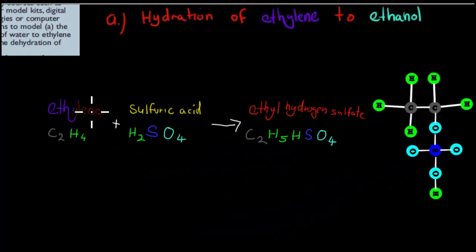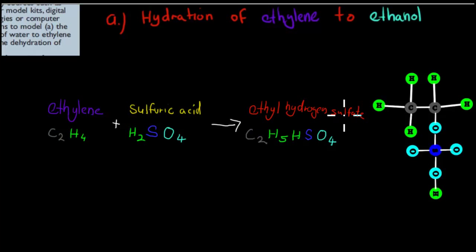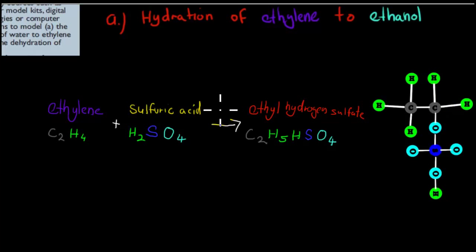So what you saw in the animation was ethylene — the original molecule C₂H₄ — combining with sulfuric acid H₂SO₄. When they combined they made ethyl hydrogen sulfate, which has the chemical structure C₂H₅HSO₄ — just all of those atoms together. It was also important to remember that the reaction didn't actually happen until the temperature was increased, to about 300 degrees.